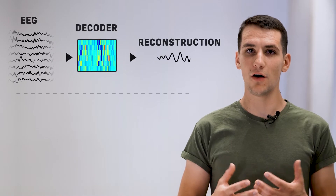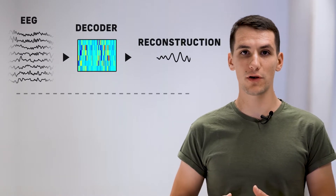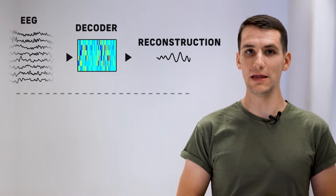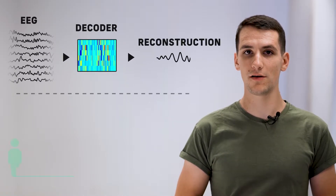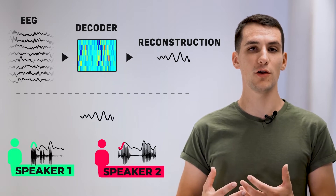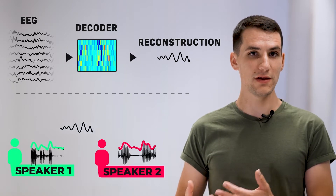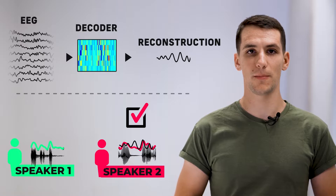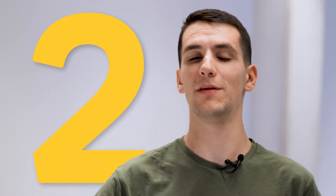Traditionally, AAD algorithms reconstruct the attended speech envelope from the EEG of the listener and compare it with the speech envelopes of the recorded speech signals to identify the attended speaker. However, this stimulus reconstruction algorithm suffers from two critical limitations.